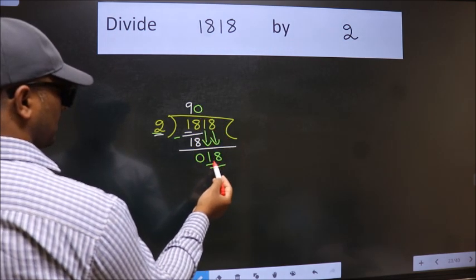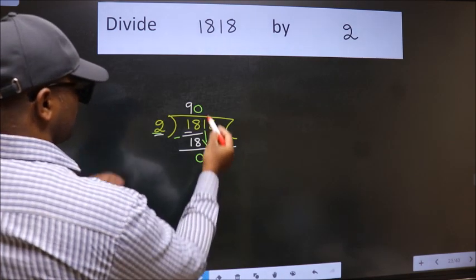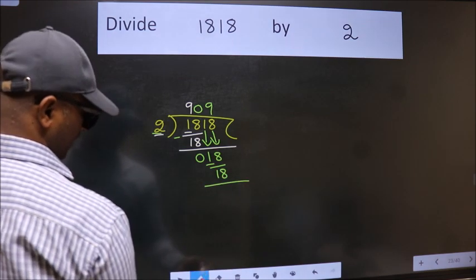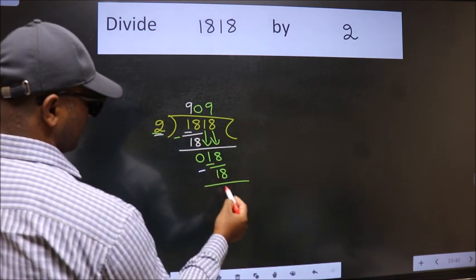So, 18. When do we get 18? In 2 table is 2 times 9 is 18. Now we subtract. We get 0.